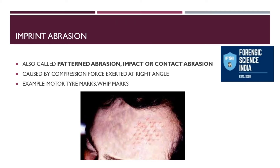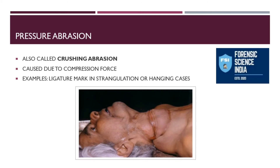Pressure abrasions are also known as crushing abrasions, caused by compression force. Examples are ligature marks in strangulation or hanging cases, often found near the thoracic region or throat, and these can be complete C, inverted C, or incomplete C shaped. These are useful in understanding what kind of ligature material was used, the height of hanging, the dimension of the ligature material, and how long the ligature material had been present.